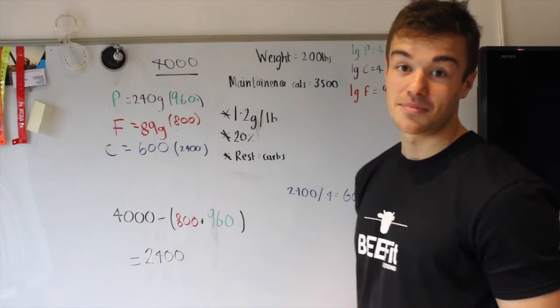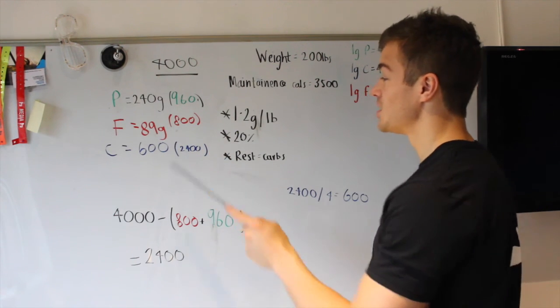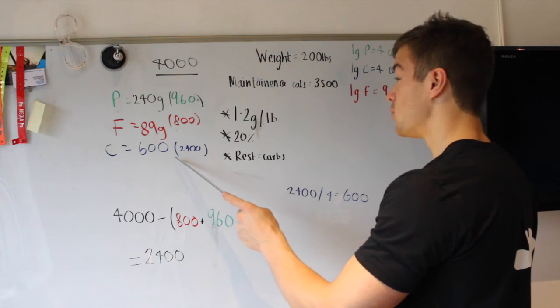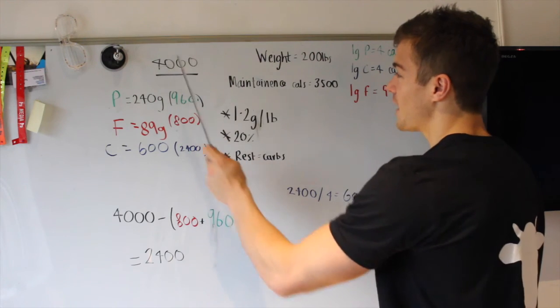So, our bulk macros are going to be 240 grams of protein, which equals 960 calories. 89 grams of fat, which equals 800 calories. 600 grams of carbs, which equals 2,400 calories. And that will add together to give us 4,000 calories.